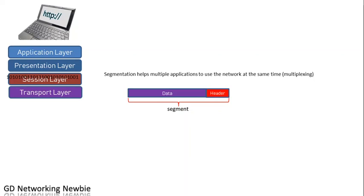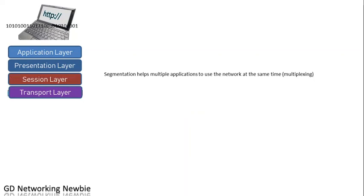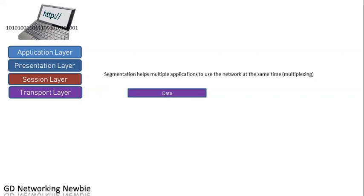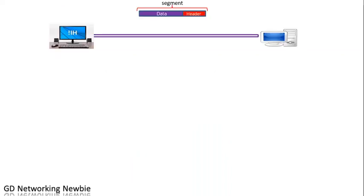At the same time we can use email, web pages, and video streaming. Multiple application programs can use the network simultaneously because of segmentation. Otherwise, only one application would be allowed to use the network at one time. Similarly, the application program generates data, it is handed to the transport layer, which puts the data byte-wise into the data part of the segment and adds a header on top — and we call it a segment. Today we are going to discuss the header part of this segment — what is inside the TCP header.